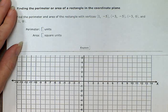Finding the perimeter or area of a rectangle in the coordinate plane. Find the perimeter and area of the rectangle with vertices 1,